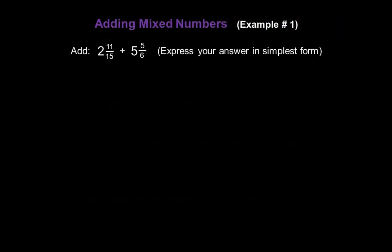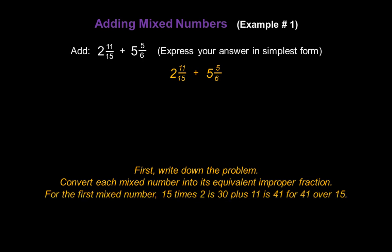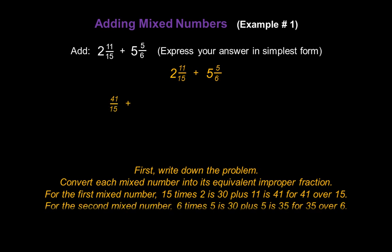Now let's work some more examples. Let's add two and eleven-fifteenths and five and five-sixths, and express the answer in simplest form. We write down the problem: two and eleven-fifteenths plus five and five-sixths. Convert each mixed number into its equivalent improper fraction. For the first mixed number, fifteen times two is thirty, plus eleven in the numerator gives us forty-one over fifteen. For the second mixed number, six times five is thirty, plus five in the numerator gives us thirty-five over six.